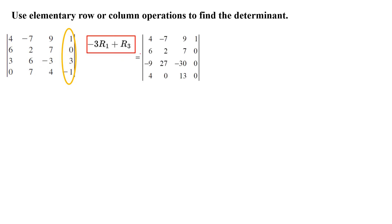So here you have four, negative seven, nine, one. The second row stays the same: six, two, seven, zero. This row is now negative nine, 27, negative 30, and zero. You could also add the first row and the last row to make this entry equal to zero. So now pay attention: your last column has one and the rest of the entries are all equal to zero.